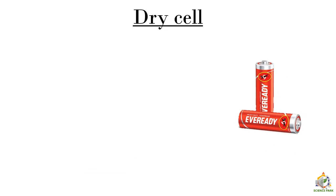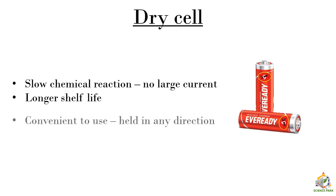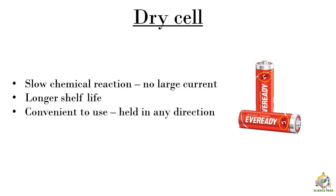Now let's see a few properties of dry cell. Dry cell is used where there is no need of large current because the chemical reaction which is going on inside a dry cell is very slow. That's why we can't get large current through dry cell. Circuits like remote controls and many other things in our home we use dry cell. It has a longer shelf life, that means a cell can work for around a month or days. It is very convenient to use. You can hold it in any direction, you can even carry it in your pocket.